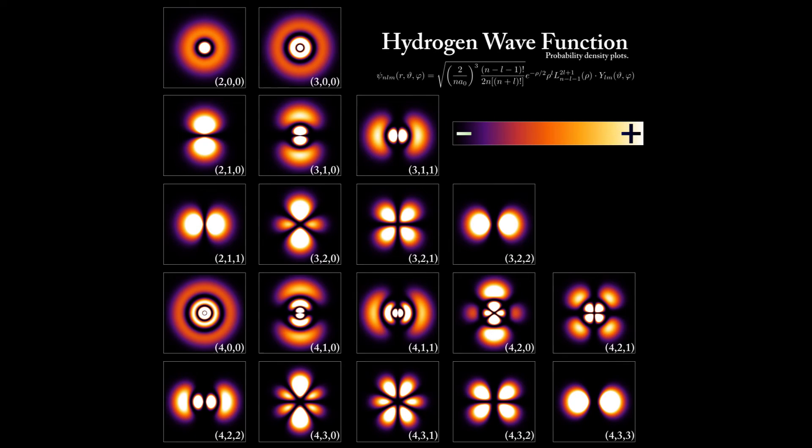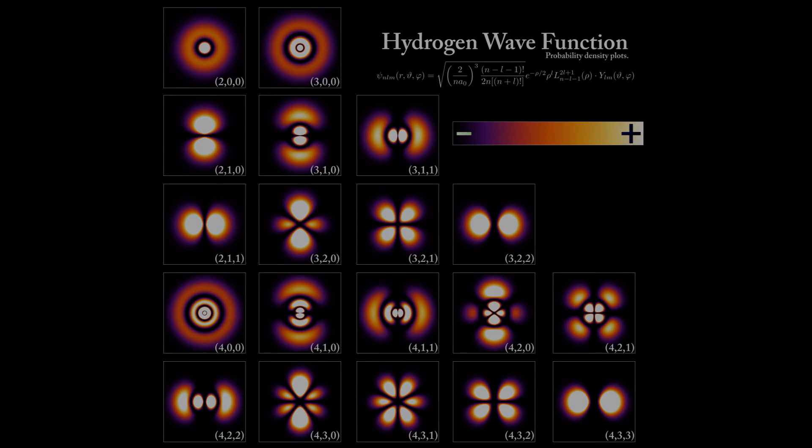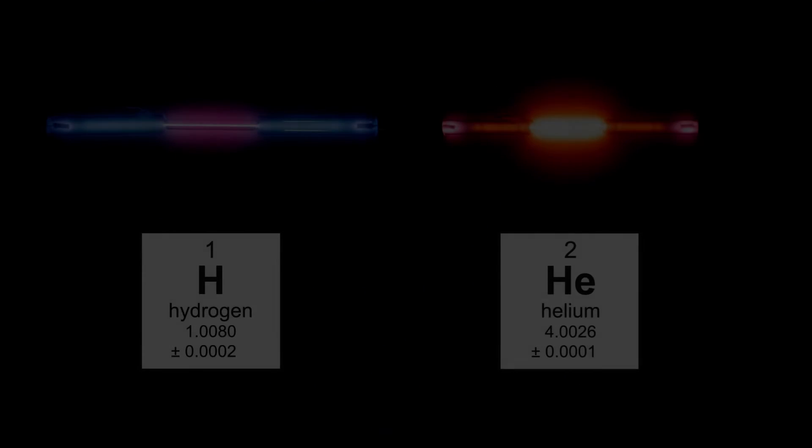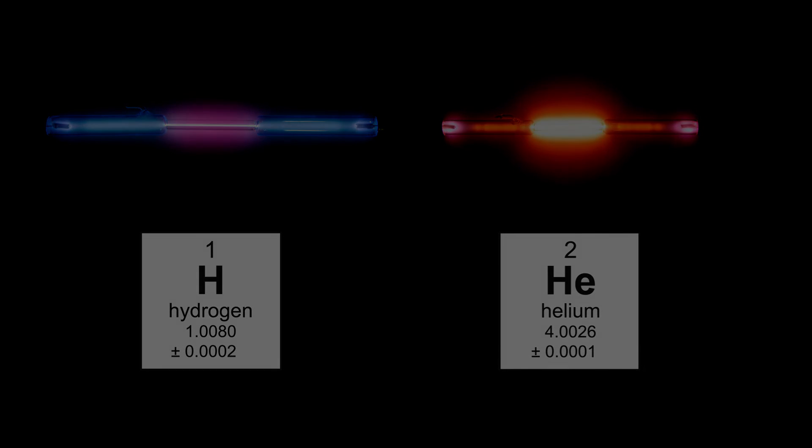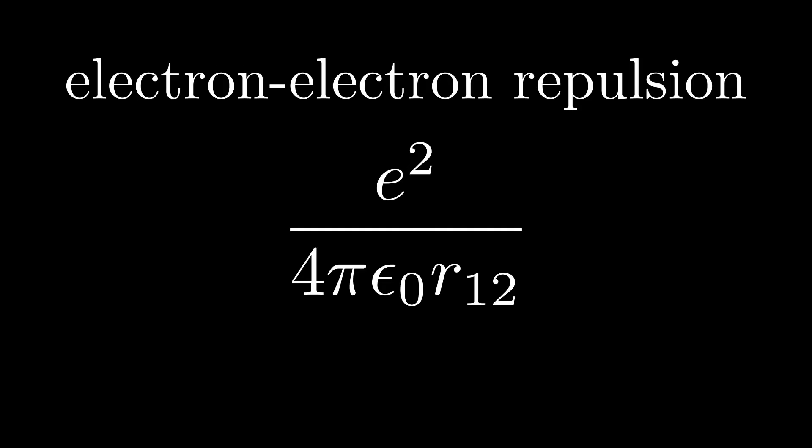This concludes our discussion of the angular parts of the atomic orbital, and our discussion of the structure of hydrogen. We'll use these results extensively in our future discussion of atomic structure. The next element on the periodic table is helium. However, we cannot immediately understand the structure of helium. This is because due to the electron-electron repulsion, the Schrodinger equation no longer can be solved analytically. We need to resort to various approximation methods.